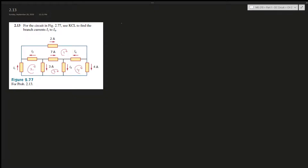Question 213: for the circuit in the figure, use KCL to find the branch currents i1 to i4. We need to use the current law — the amount of current entering and exiting a node should equal each other. There's one node here, and remember all of this is one node, and then there's another one, another one, and another one. Let's include this one and set the problem up.